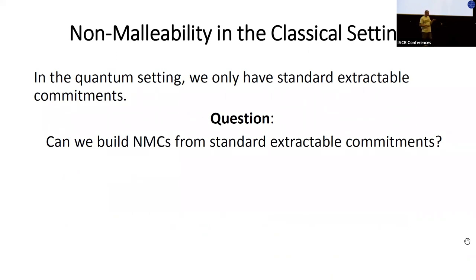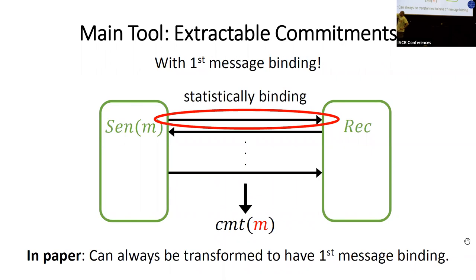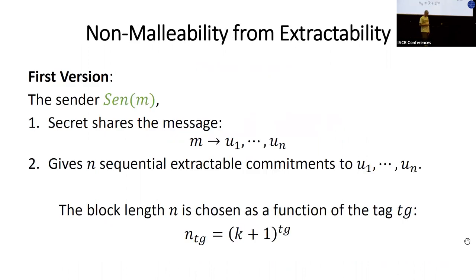The technical question we ask is: the only extractable cryptographic object we have in the quantum setting is plain extractable commitments. We try to build non-malleable commitments from just plain extractable commitments. We will use extractable commitments with one additional property: first-message binding. First-message binding says that the first message of the protocol — from sender to receiver — is perfectly binding, meaning once it is sent, the value m in the entire commitment is fixed. We show in the paper that any standard extractable commitment can be made first-message binding.